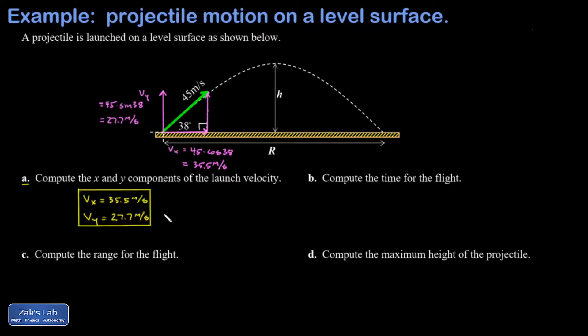In part b I want the flight time, and the key to deciding how to approach this is looking at the landing of the object and asking what extra bit of information do I have there. For projectile motion problems that's either going to be a known final x coordinate or a known final y coordinate. In this case it's a known final y coordinate of zero, so I'm going to approach this by using the y analysis of the problem.